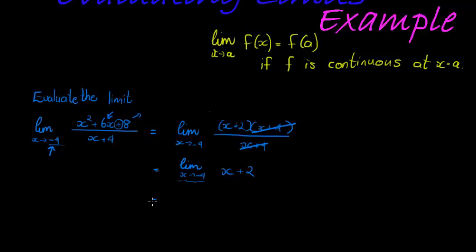So it must be defined at that point, and as soon as we can see that it is continuous at that point, then we may substitute, which means that this will now become negative 4 plus 2, which is equal to negative 2. And that is the limit.